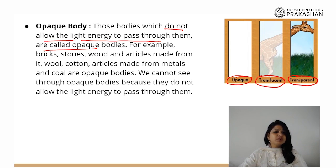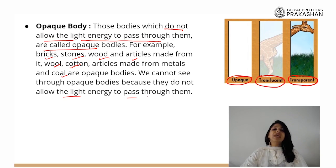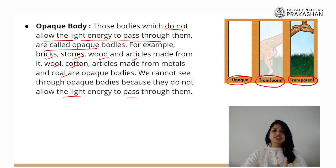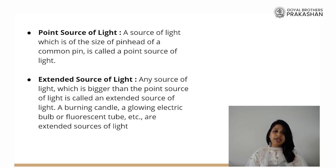Examples of opaque materials include brick, stones, wood, articles made from wool, cotton, articles made from metals, coal etc. We cannot see through opaque bodies because they do not allow light energy to pass through them. We can somewhat see through translucent bodies because they partially allow light to pass, and transparent mediums completely allow the light to pass through them, so we are able to see through them clearly.